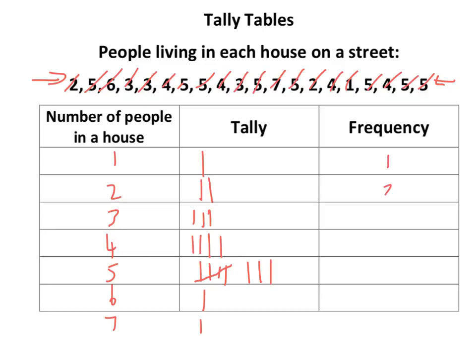The frequency is just how many tally marks there are. So counting up: one, two, three, four — that's eight — one and one. If we add those all up we get six, ten, twenty. There are twenty data points in total. Pretty straightforward.